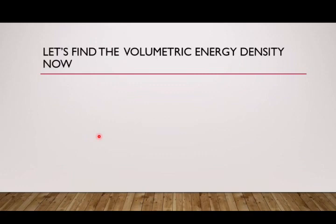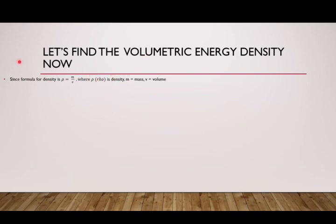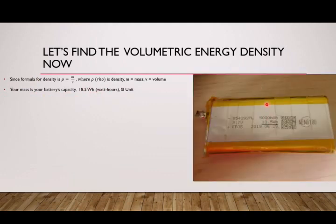Now let's find the volumetric energy density. Let's use the formula for density. This symbol here is rho, or density, in kilograms per cubic meter — it equals mass over volume. Use your battery capacity in SI units, which is 18.5 watt-hours in my case. You can find battery capacity by multiplying the capacity in ampere-hours by 3.7 volts, and you'll get the same value in watt-hours.